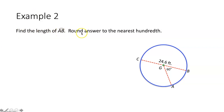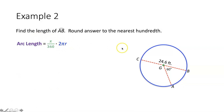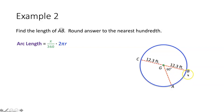Example 2 says find the length of arc AB; round answer to the nearest hundredth. Note that this time I am finding the length of arc AB, not the measure. So my answer will be in feet, as it's a portion of the circumference. Using the arc length formula — X over 360 times the circumference 2πR or πD — arc AB is a minor arc whose central angle AGB measures 60 degrees. Plugging in 60 for X and 12.3 feet for R, I get 60 over 360 times 2π times 12.3.